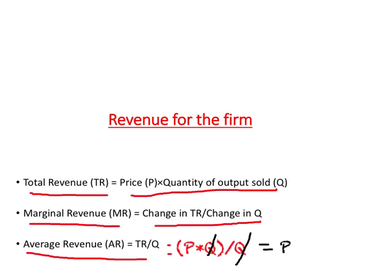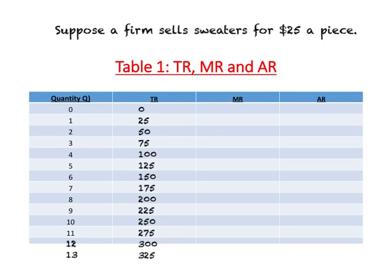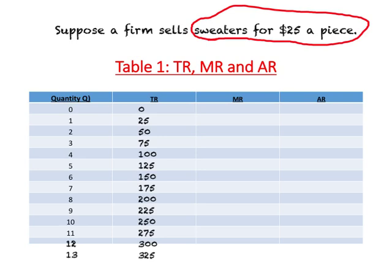Consider the following example: suppose a firm sells sweaters at twenty-five dollars a piece and can sell as many as it wants at that price. In the table, the first column shows quantity running from 0 to 13. Total revenue is zero when nothing is sold, twenty-five dollars when one sweater is sold, fifty dollars when two sweaters are sold — and in this way we can complete the entire total revenue column.